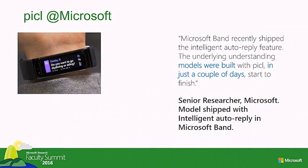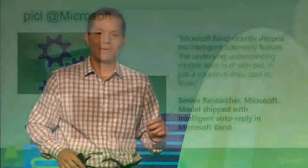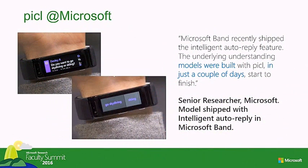Another example is the Microsoft Band fitness tracker. When you receive a text message on such a small device, responding is hard. Some people in the group had the idea that many messages needing a quick response are yes/no or multiple-choice questions. By training a classifier to detect those and an entity extractor to parse out the options, the user can just tap to respond. Both the classifier and entity extractor were built using PICKLE. Interestingly, this example was made by a researcher very well-versed in machine learning, who still drew a lot of value from this interactive, friendly environment.